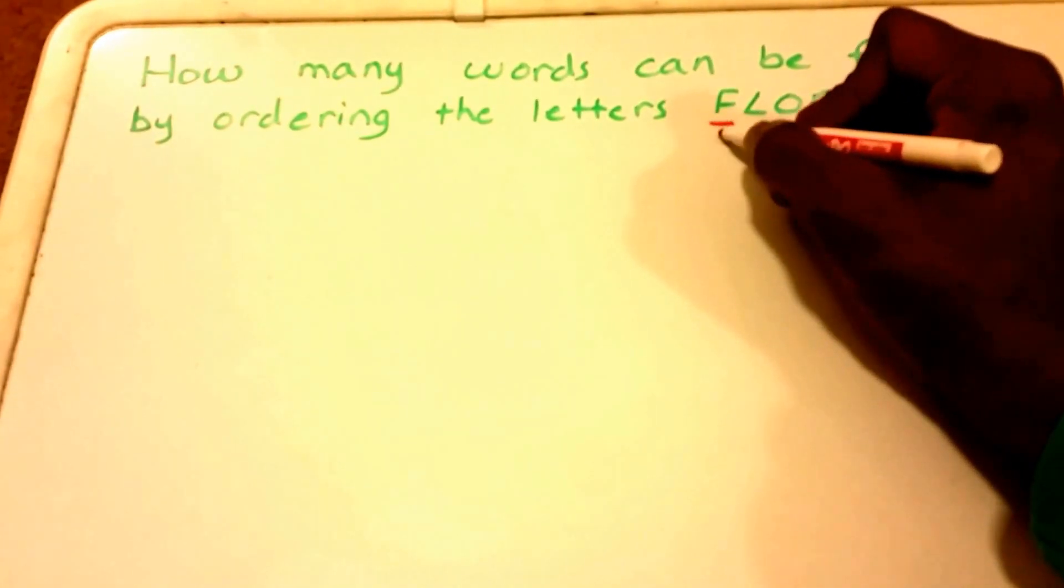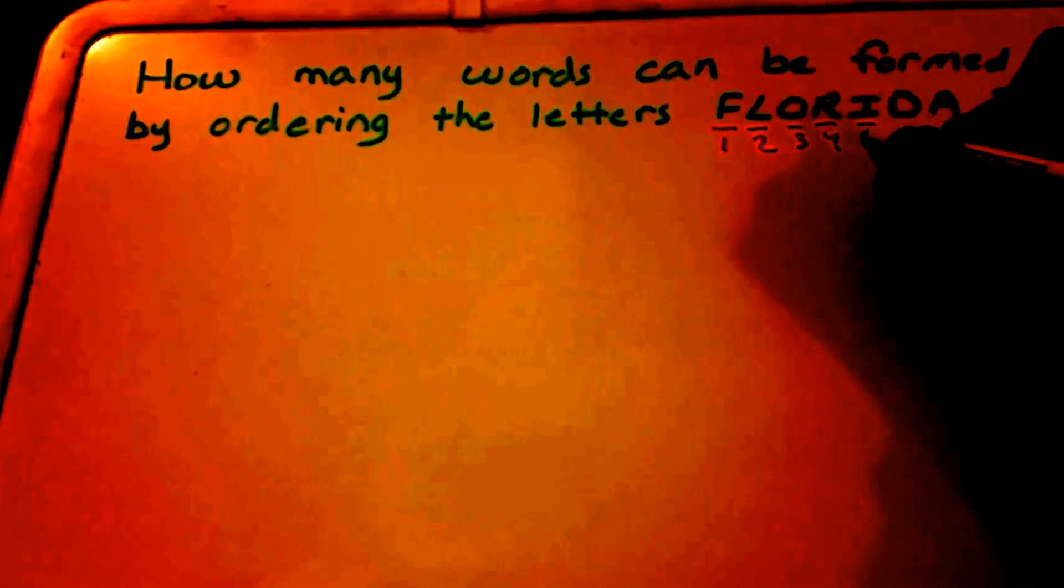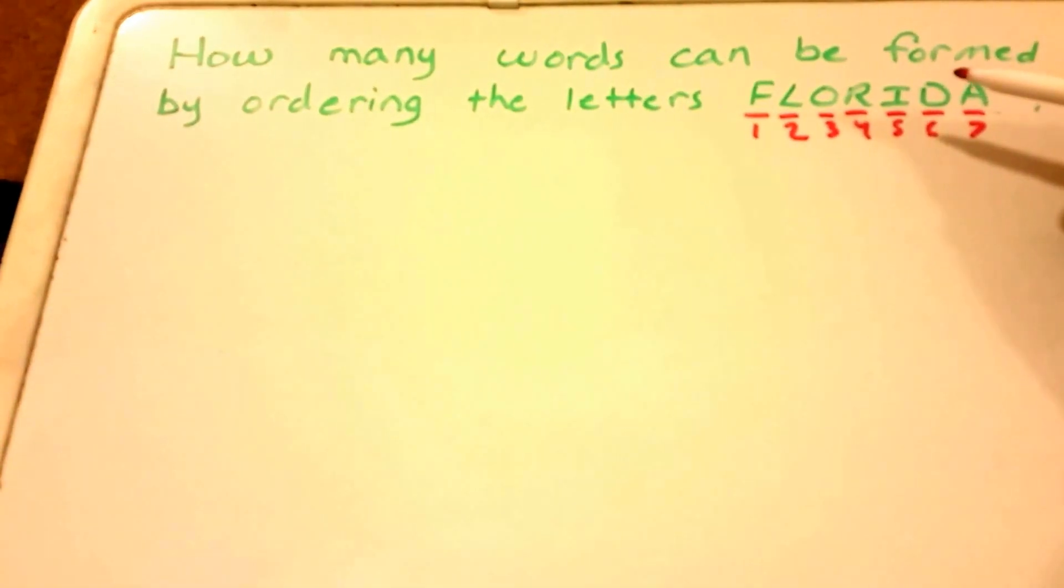Count how many letters we have, which is one, two, three, four, five, six, seven. Now what you'll notice is that each letter here is unique, so that makes this problem a lot easier. We can just use a permutation.